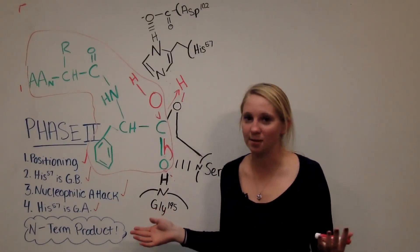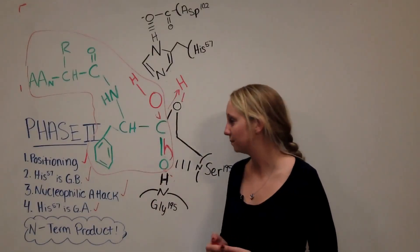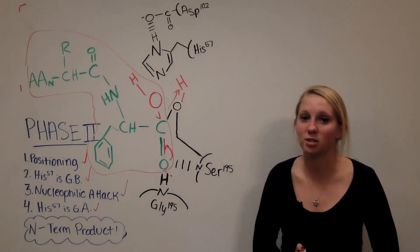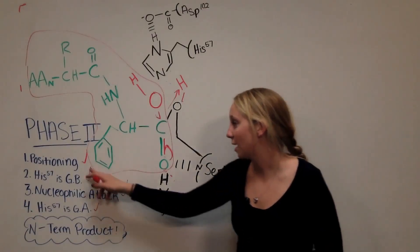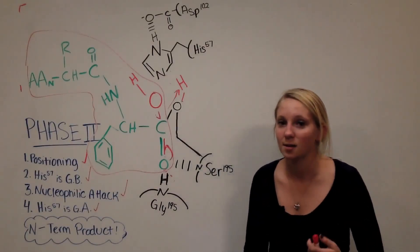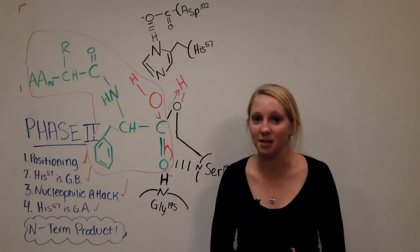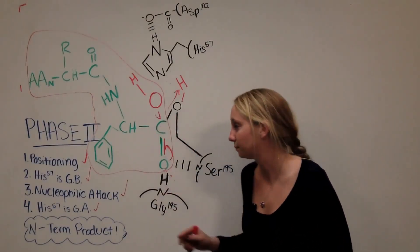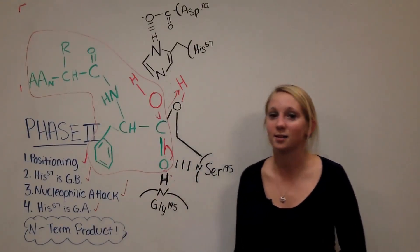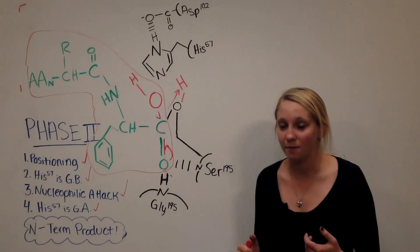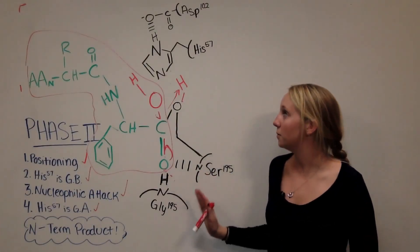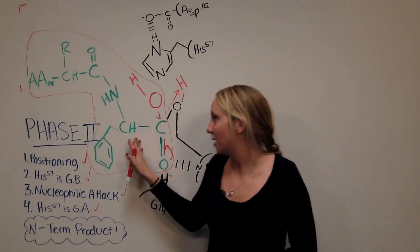The enzyme can now perform the whole process all over again. To review: in each phase we first had a positioning step — in phase one it was the polypeptide chain, in phase two it was the water molecule. Next, histidine acted as a general base to take a proton: from serine in phase one, from water in phase two. Then there was a nucleophilic attack of the carbonyl group in each case. Finally, histidine acted as a general acid to protonate the leaving group — the amine in phase one to release the C-terminal product, and serine in phase two to regenerate the enzyme and create the N-terminal product.